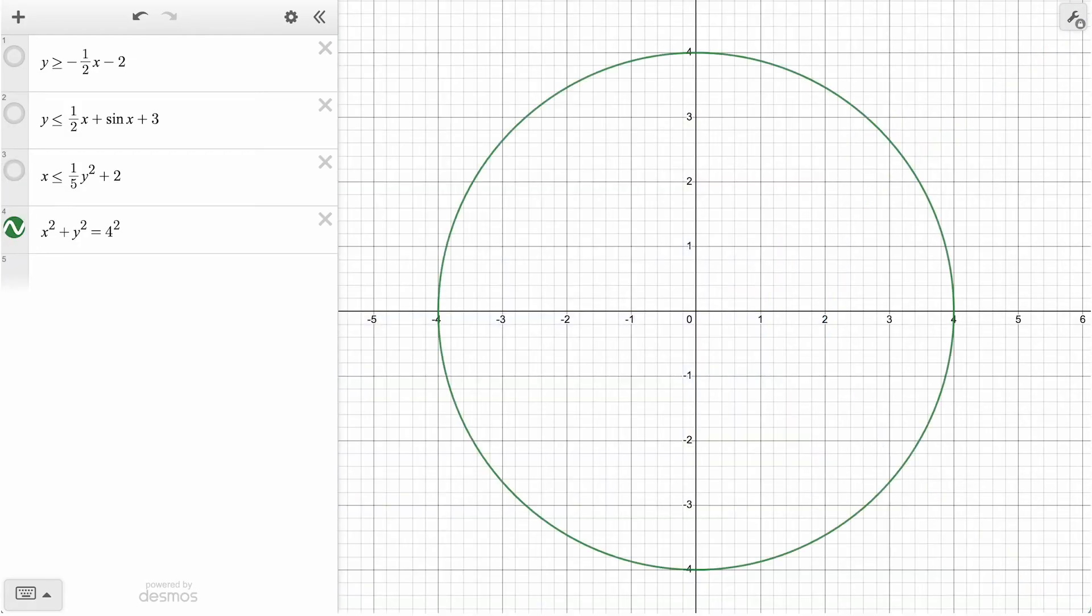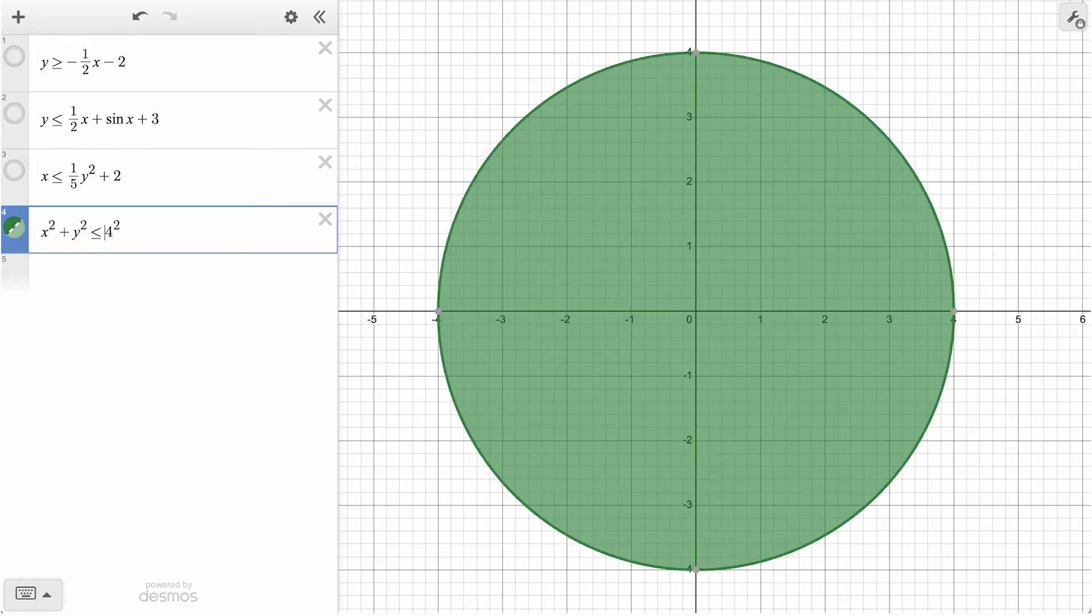For this last circle, this represents the set of points that are all four units away from the origin. If we use an inequality here, we can visualize the region more than four or less than four units from the origin.